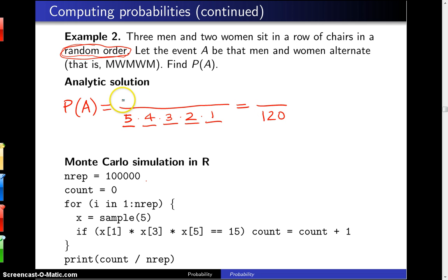So now in the numerator, our job is to figure out how many of those 120 equally likely seatings correspond to this particular ordering, that is, man, woman, man, woman, man.